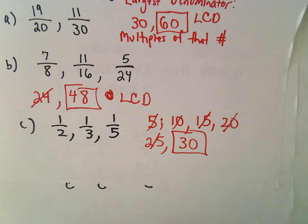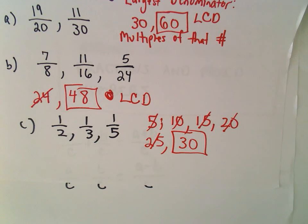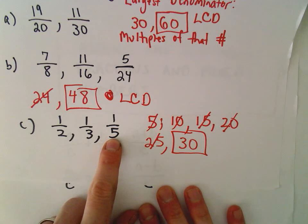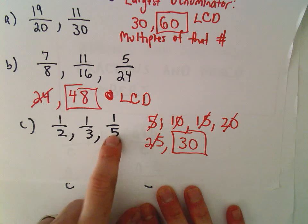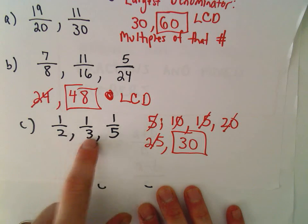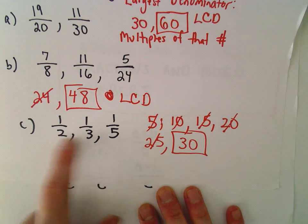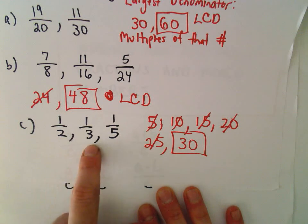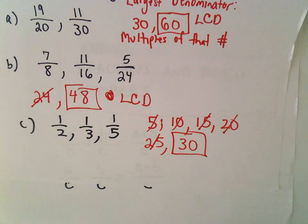Maybe this seems a little tedious, but I think if you practice a couple times — this is how I've done it my whole life, honestly, finding a denominator. To me it's much faster than making factor trees and doing all that stuff. So I look at the largest number, and then I just start looking at multiples of it. As soon as I find the multiple that's divisible by all the denominators, that's my least common denominator.